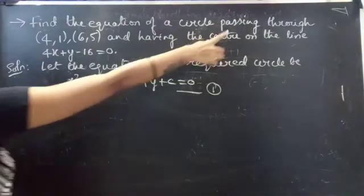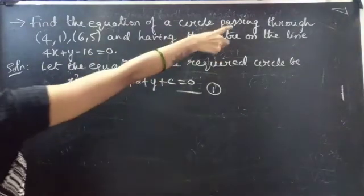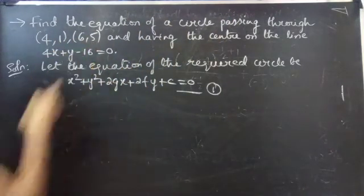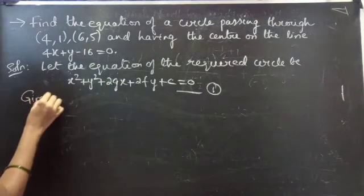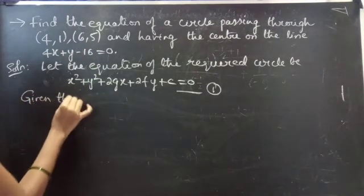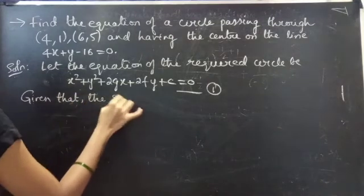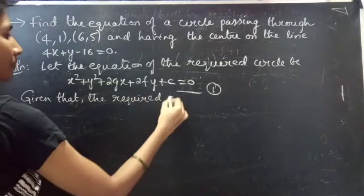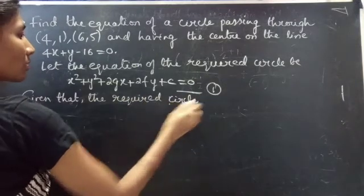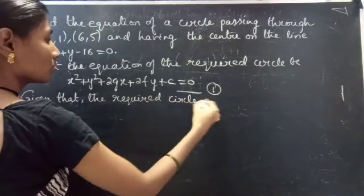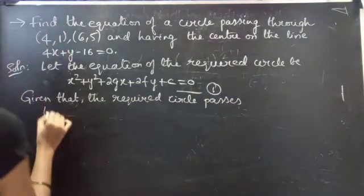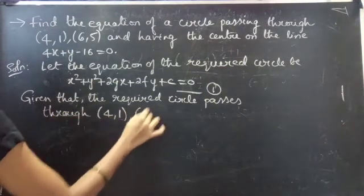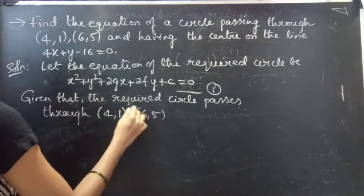We are given that the circle passes through two points (4, 1) and (6, 5).